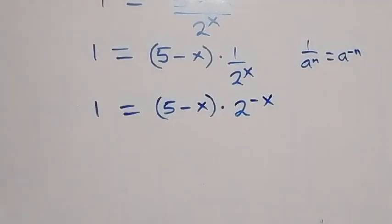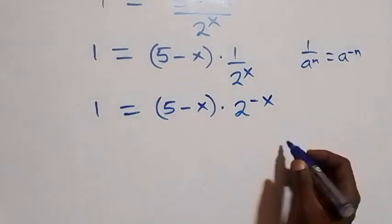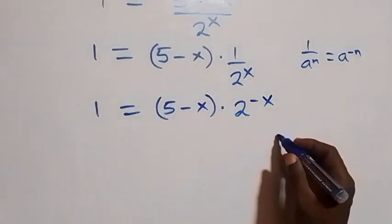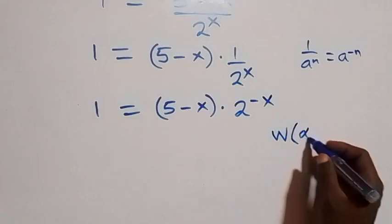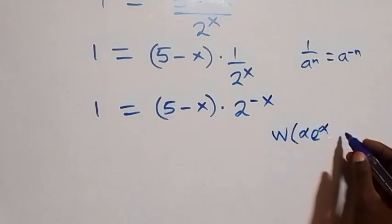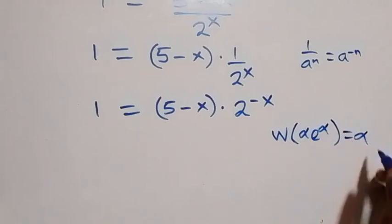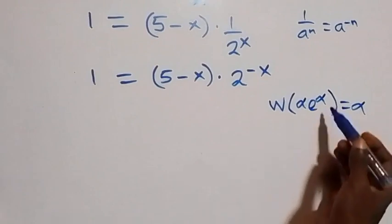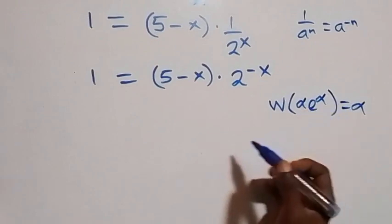From here we are intending to use the Lambert W function. From the W function, W of alpha times e raised to power alpha equals alpha. So we need to make the power and the coefficient here to be the same.